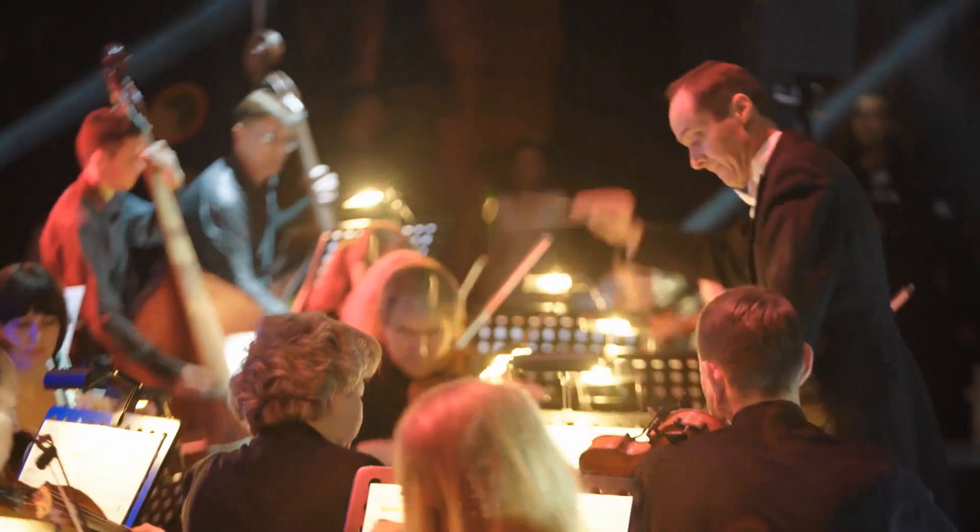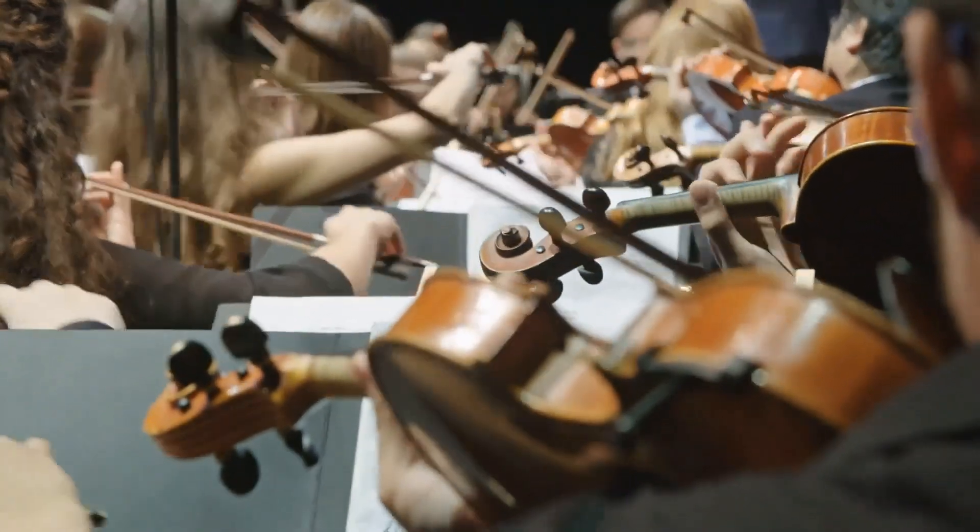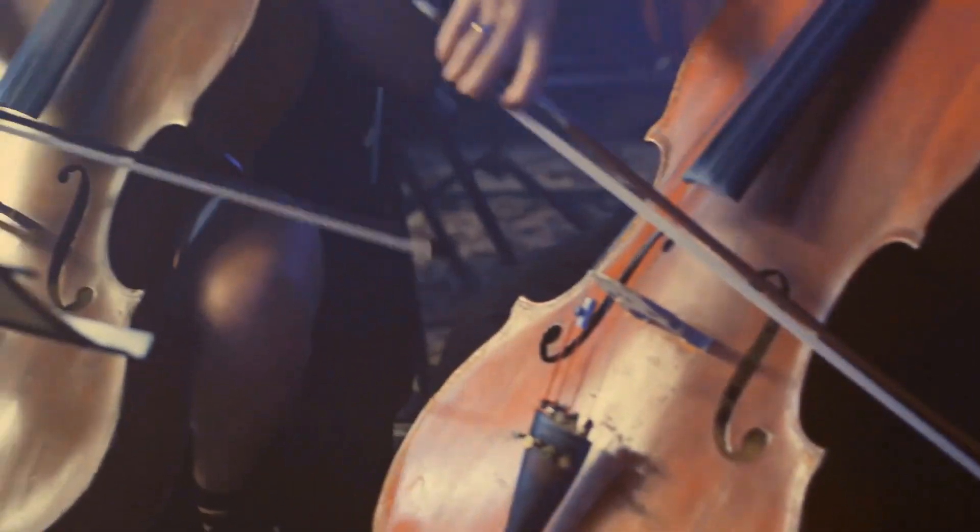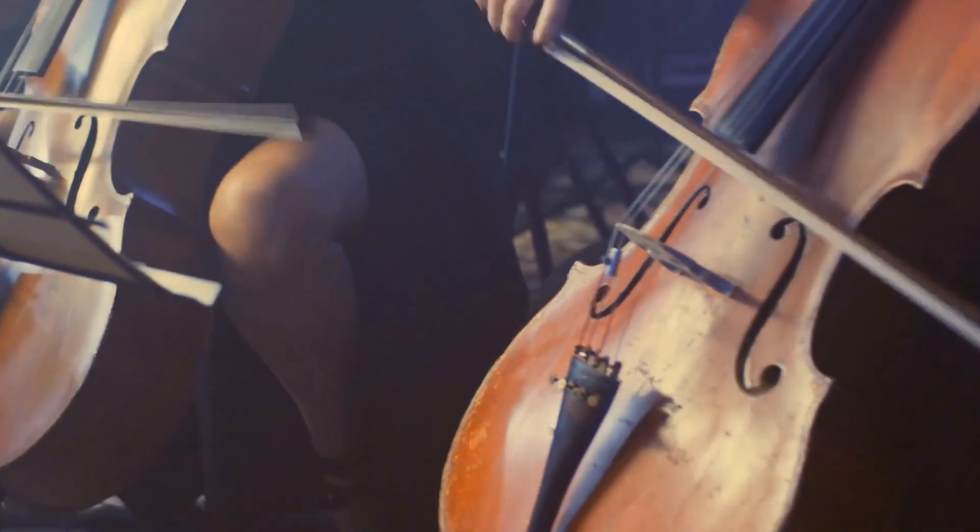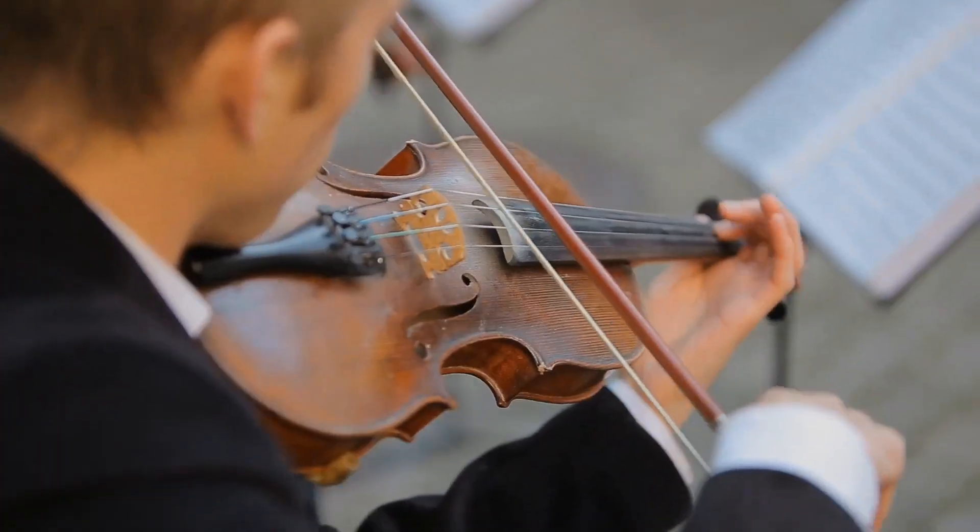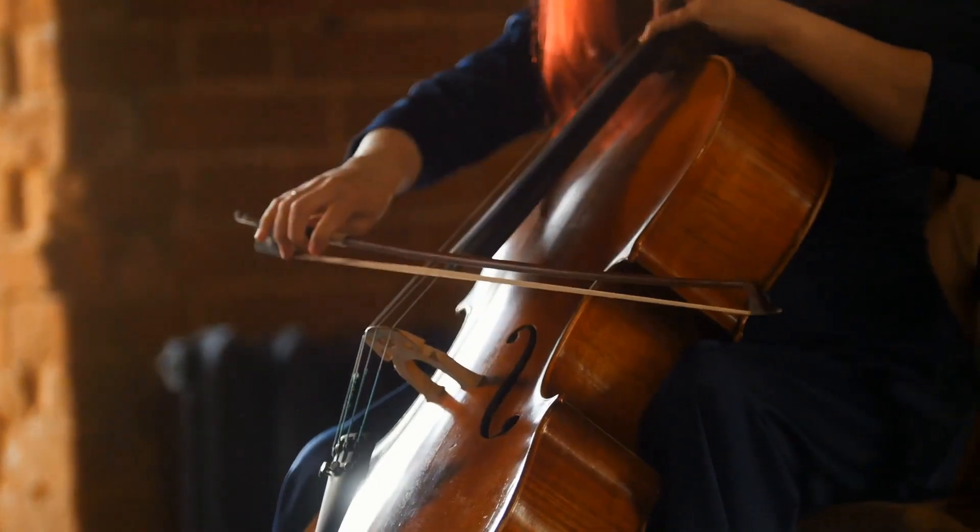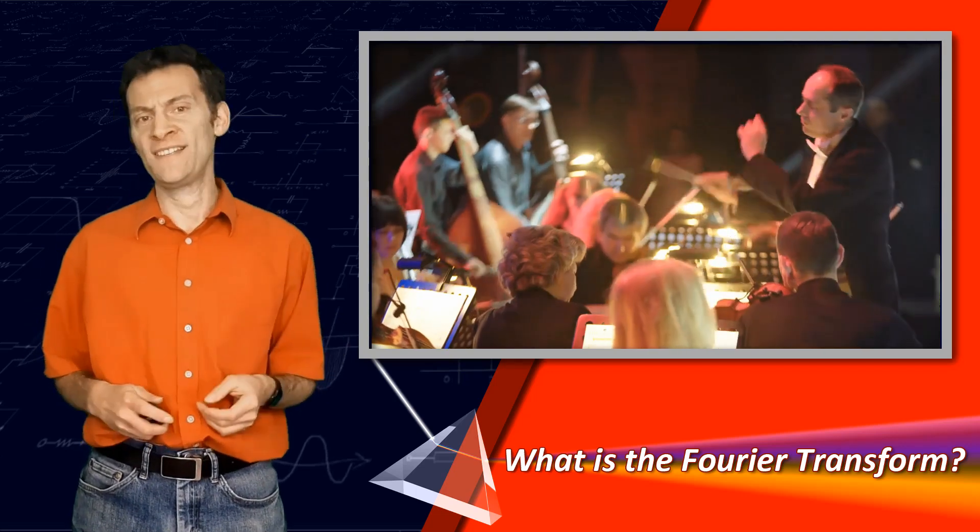An orchestra, lots of different instruments all playing together. But within this cacophony of sound you can hear some flutes, some violins and maybe some cellos. How could you pick out these sounds?